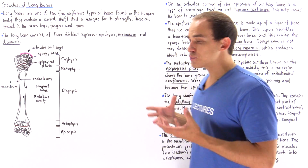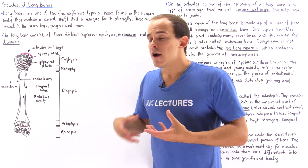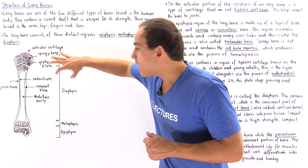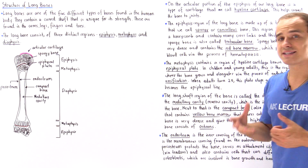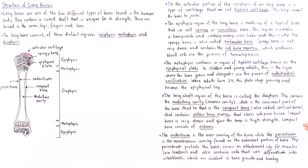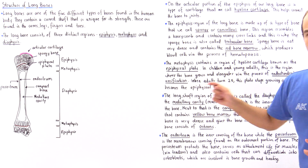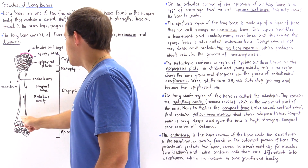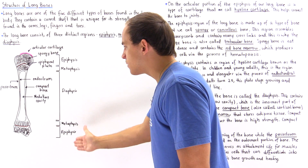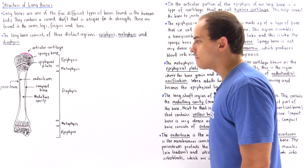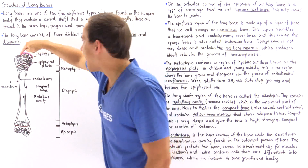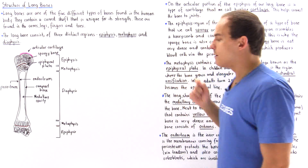The compact bone is also responsible for giving our bone tensile strength as well as compressive strength, and it consists of individual units known as osteons. To summarize the diaphysis: it contains the medullary cavity, also known as the marrow cavity, which is the innermost part of the bone. The lining of the inner portion is known as the endosteum, while the outermost membranous fibrous covering found outside the entire bone is known as the periosteum.